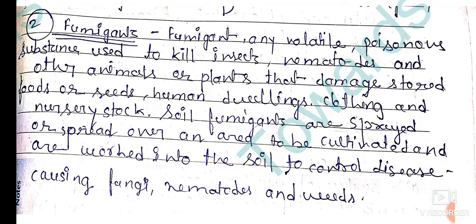Hello everyone, welcome back to my YouTube channel. Today's topic is fumigants. A fumigant is any volatile poisonous substance used to kill insects, nematodes, and other animals or plants that damage stored food or seeds, human dwellings,